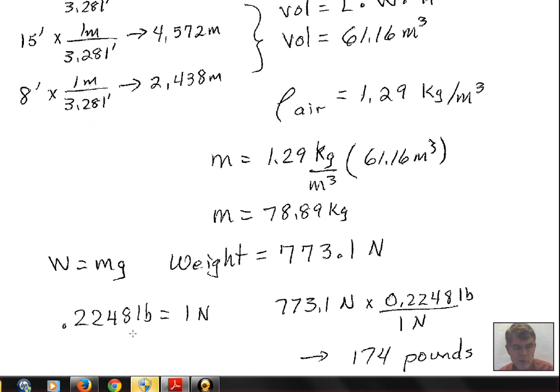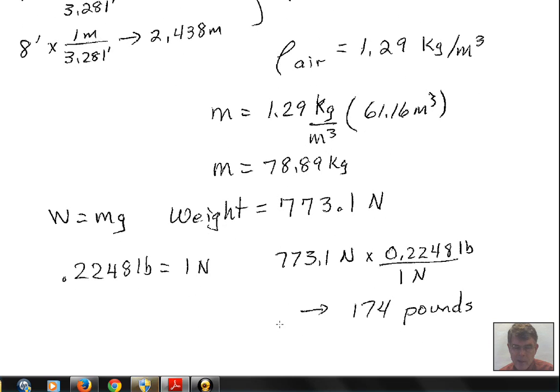There's a conversion factor between the English unit of force, the pound, and the metric unit of force, the newton. So 0.2248 pounds is 1 newton. The newton is a smaller unit than the pound. So do you expect the number of pounds to be larger or smaller than 773? Now you expect it to be smaller, and that's the way the conversion works out. We have newtons to start with. In our conversion factor, we need to put newtons in the denominator so the newton unit will cancel off. We have 174 pounds of air in the room.